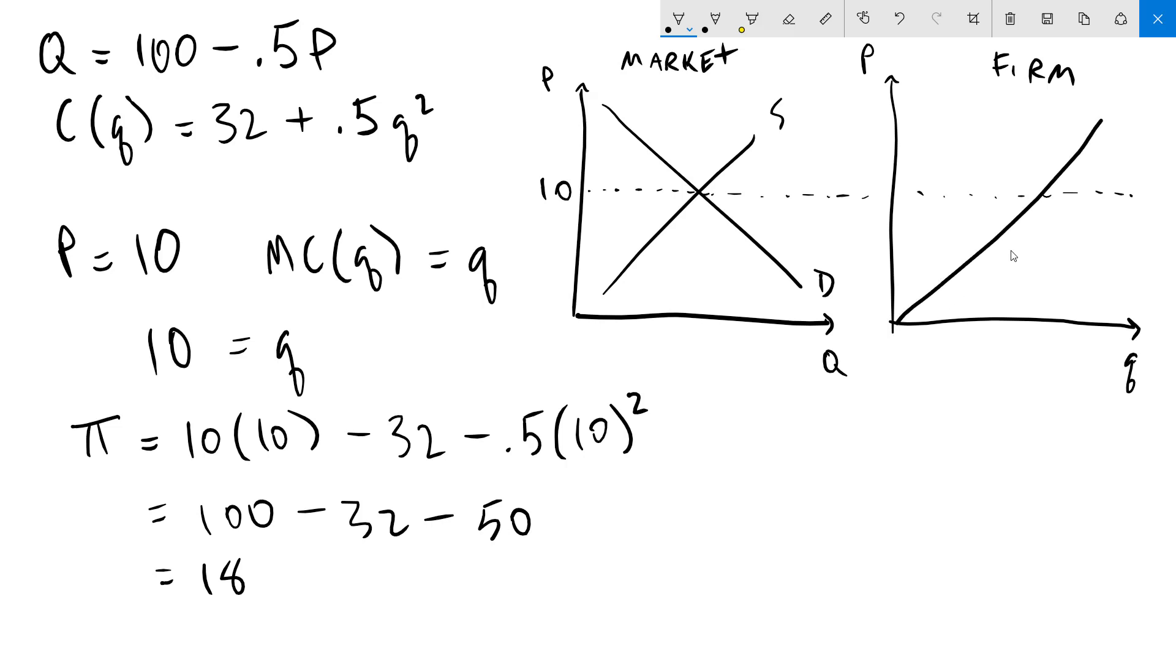I'll draw in my marginal cost curve for my firm. We know that the marginal cost curve crosses the price at a quantity of 10 based on my previous calculation. I'm also going to draw in my average total cost curve. You can see that at our current profit maximizing output the firm is making positive profit because the price is above average total cost. In fact, they're making a profit of 18.